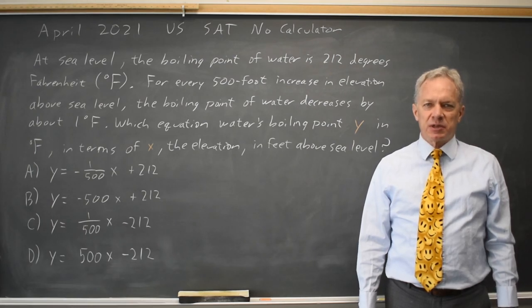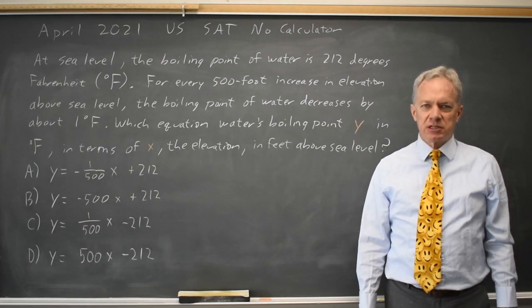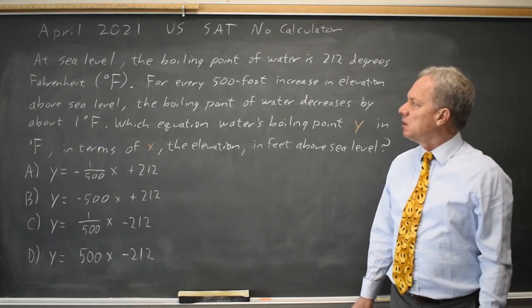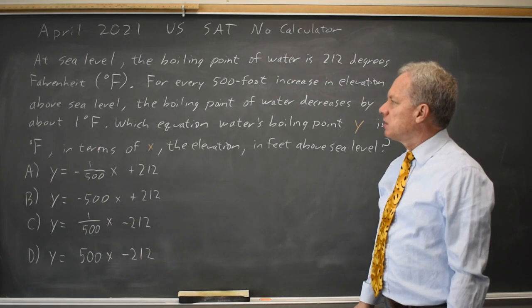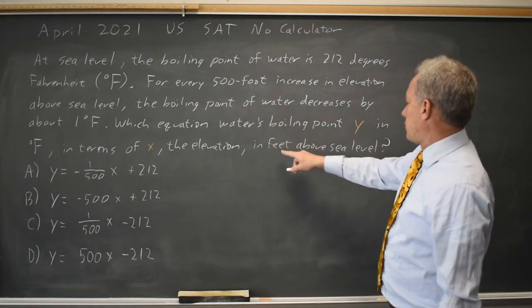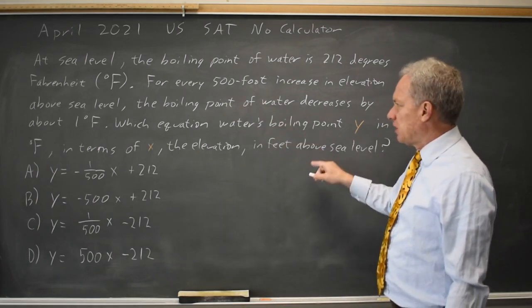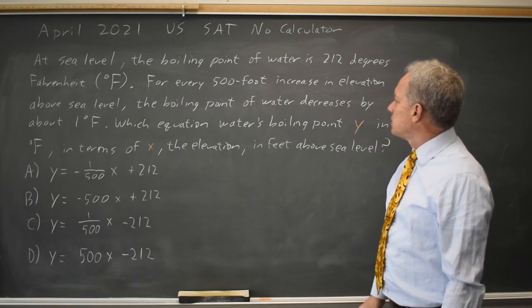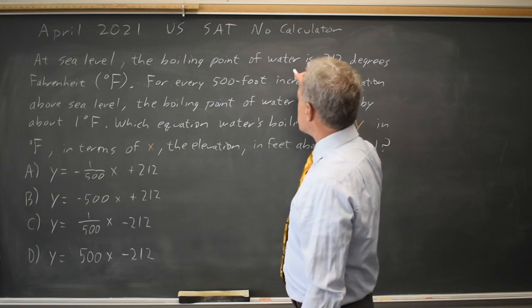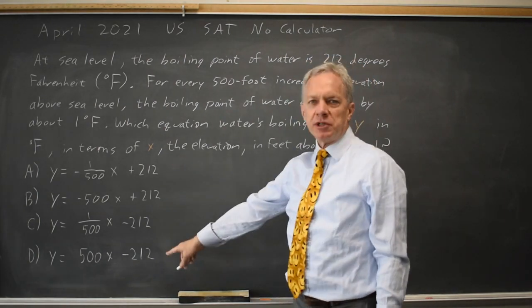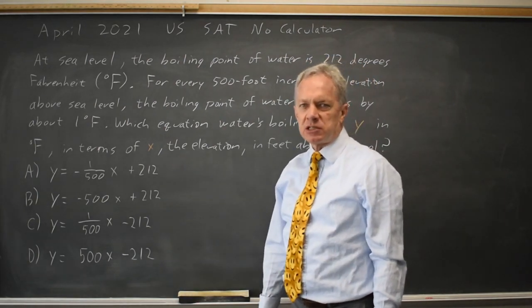I'm Dr. Roger, and this question is from the April 2021 U.S. exam non-calculator section. College Board describes the boiling point of water in terms of sea level in degrees Fahrenheit and feet above sea level. The boiling point at sea level is 212 degrees Fahrenheit, and they ask which of these equations matches this description.